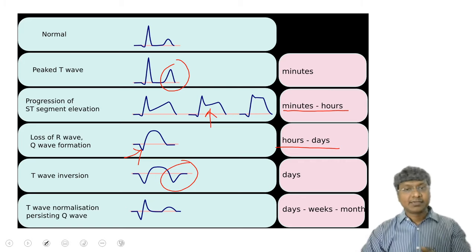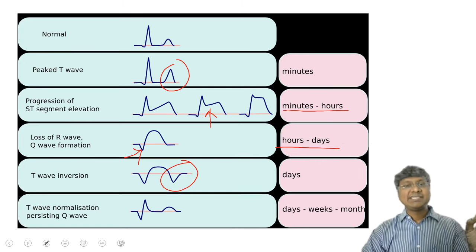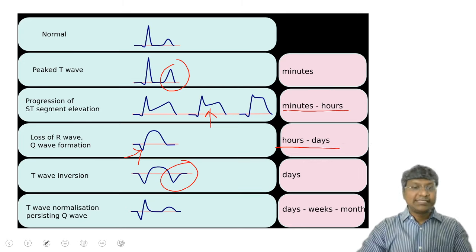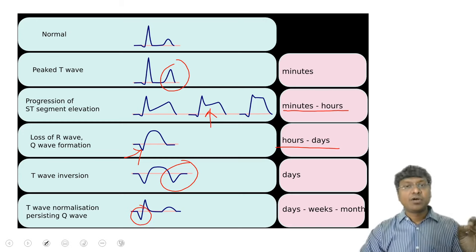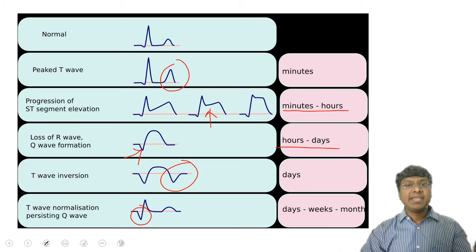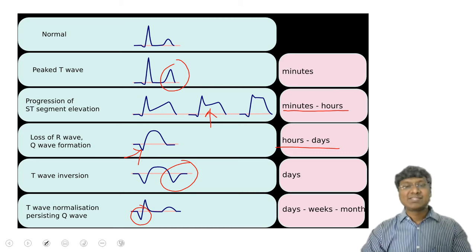And later, even after days, weeks, and months, what will be the ECG change that will persist? That is your Q wave. So, presence of the pathological Q wave tells that the individual had an old MI. These are the ECG changes what you will have in patients with MI.